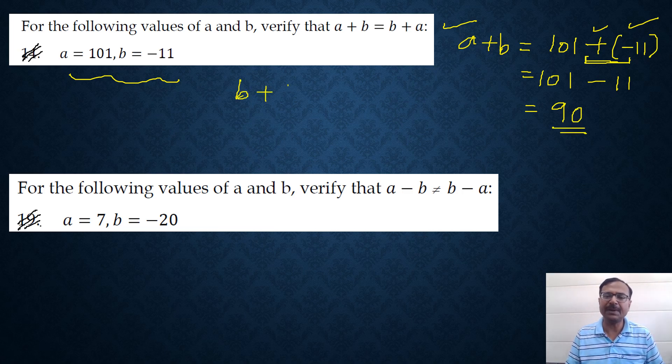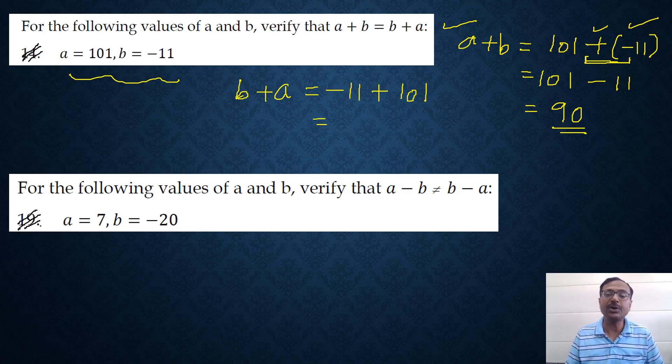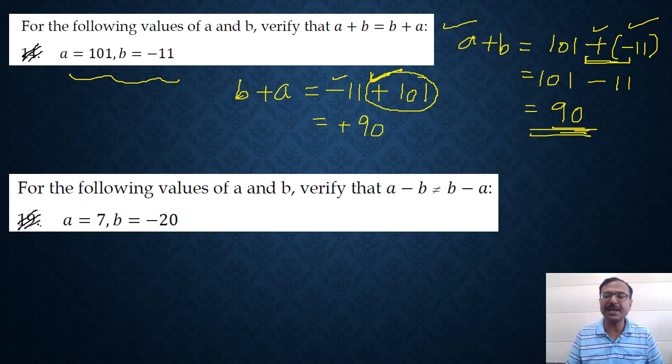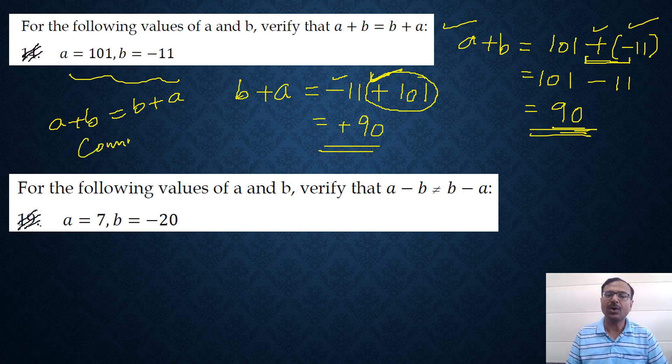What about the right hand side? B plus A. B is minus 11 plus A is 101. Notice that I have not used any bracket here because two signs are not coming together. Minus and plus make a minus and therefore I have to subtract 101 and 11 which gives me 90 and the larger integer is 101 which has a plus sign preceding it and therefore my answer will be plus 90. So you can see the answer for A plus B and the answer for B plus A is exactly the same and therefore for two integers A plus B is always equal to B plus A. Now this property is known as commutativity.